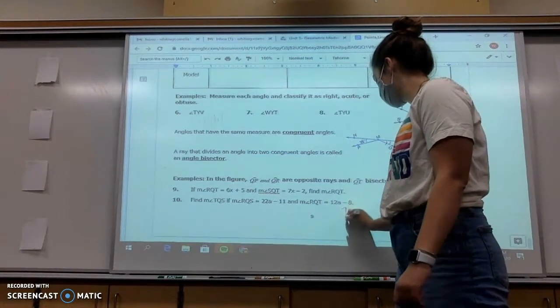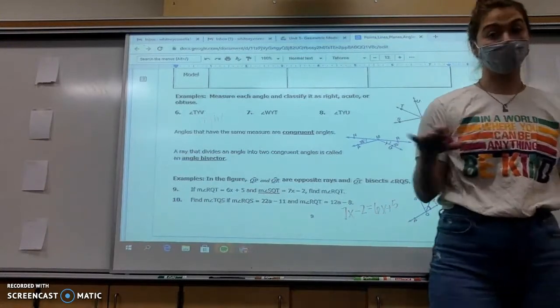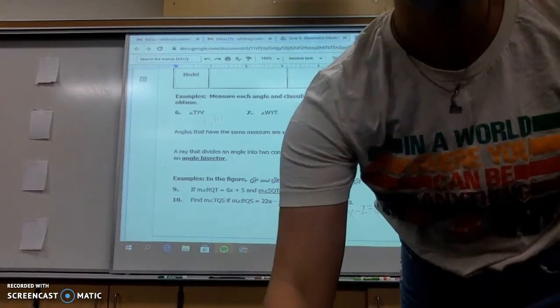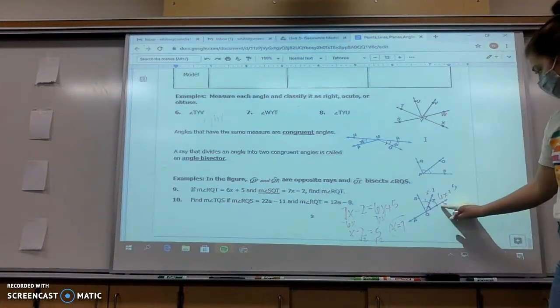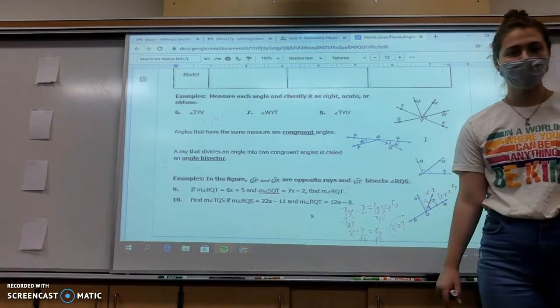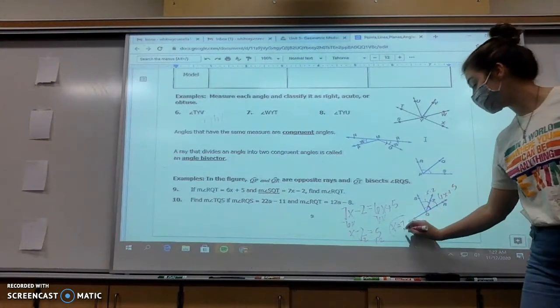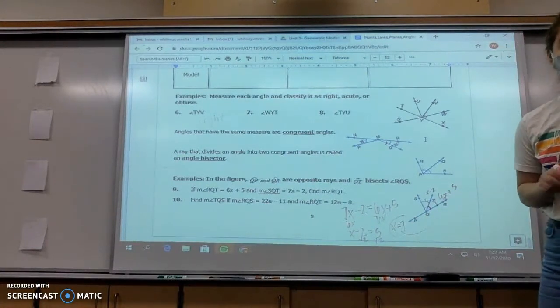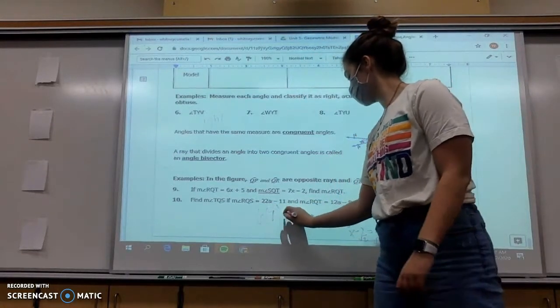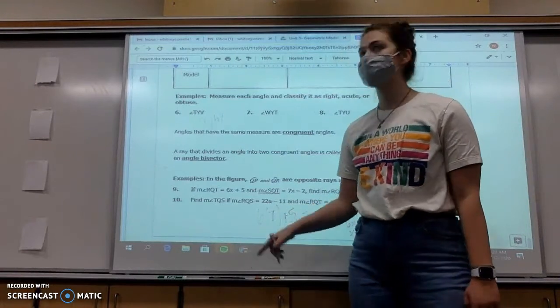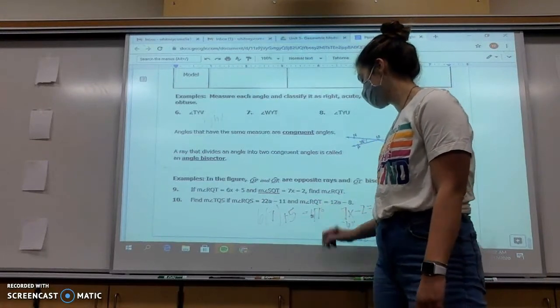We're going to go 7X minus 2 is equal to 6X plus 5. And now it's solve for X. I want you to solve for X on your own. You should have gotten X equals 7. Is that the angle of this measure? Does that look like a 7 degree angle? No. To find this angle, now what I've got to do is plug that back in for X. So I'm going to do 6 times 7 plus 5. 6 times 7 is 42 plus 5 is 47 degrees.